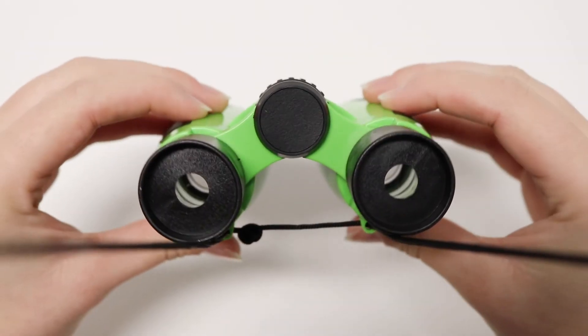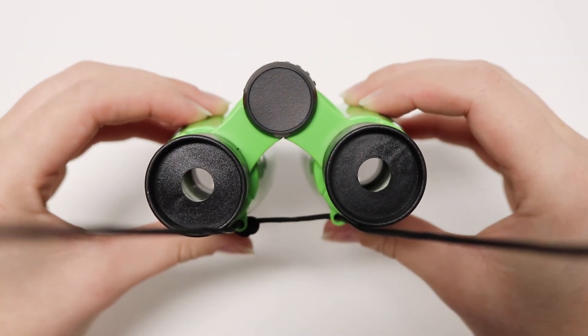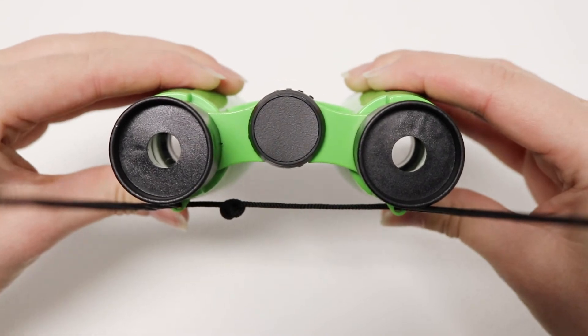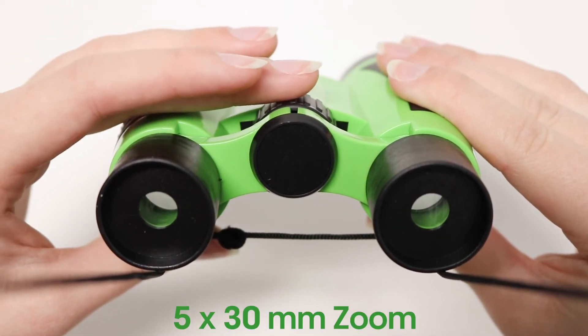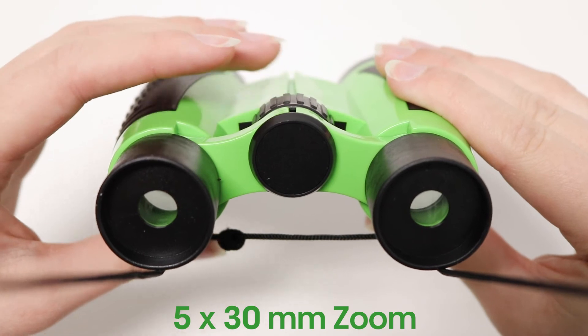Add these individual tools to help you explore nature including binoculars to see far away objects up close with five by 30 millimeter zoom and a neck strap for convenience.